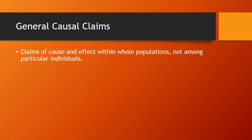Notice how that's different from general causal claims. General causal claims are claims of cause and effect within whole populations, not just among particular individuals. For example, smoking causes cancer. This claim means that in a population in which everyone smokes, we expect to see more cancer than in a population in which no one smokes. Notice I'm not talking about any particular person getting cancer, and I'm not talking about any particular person smoking. The claim is general, not specific.